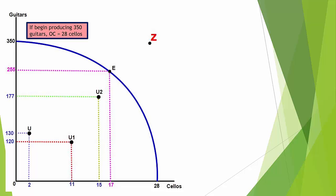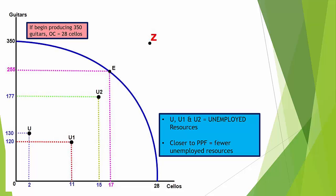Points labeled U within the PPF are points of unemployed resources. U, U1, and U2 show different quantities of unemployed resources — the closer you get to the PPF curve, the fewer unemployed resources you have. For example, at point U we're only producing 130 guitars and 2 cellos, but at U2 we're producing 177 guitars and 15 cellos, showing fewer unemployed resources as we move closer to the PPF line.